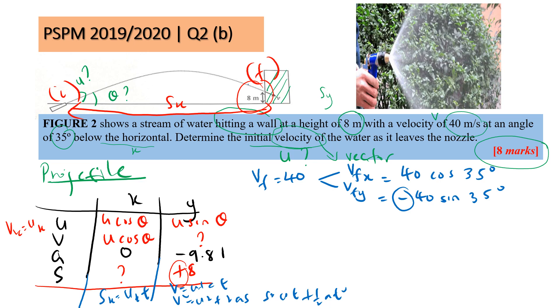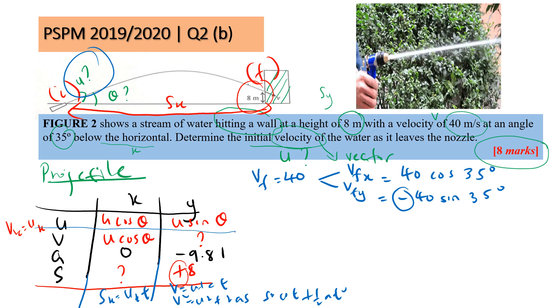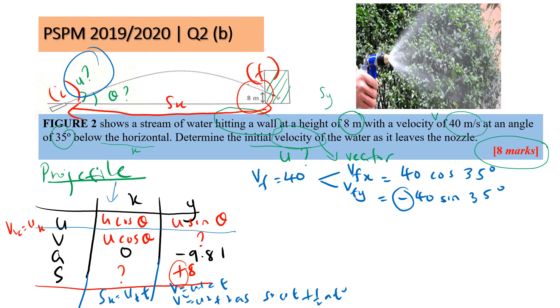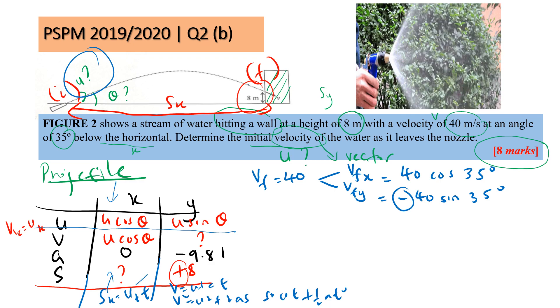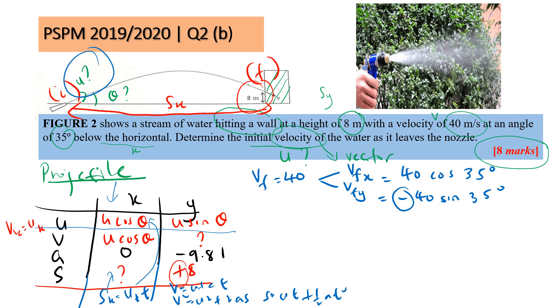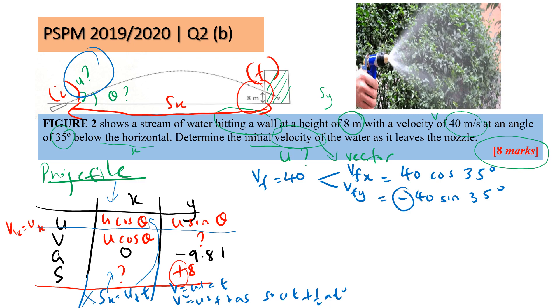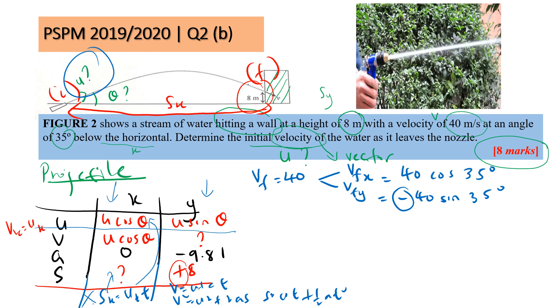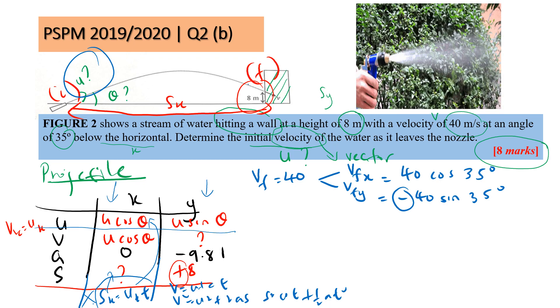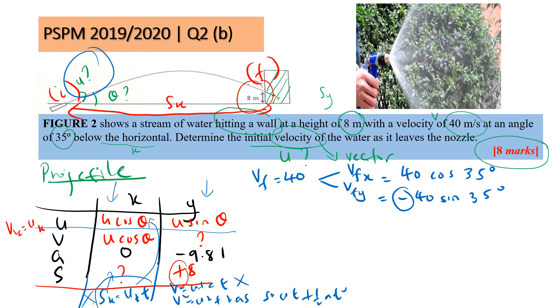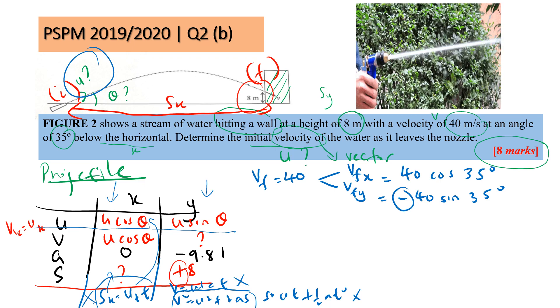They asked you to find initial velocity. I have to focus on U here. Let's start with X. My X, you only have one equation, SX equals UXT. Do I have SX? No. Do I have UX? Yes, but I don't know U or theta. So I have too many unknowns, and T also I don't know. So I can't use this first formula. So I have to change to Y component. We have three formulas that we can use. Because we don't have time, you only live with this one equation, V²=U²+2as.